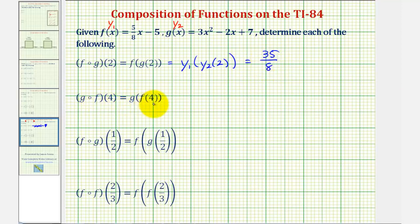Next we have g of f of four. And again we can't forget that f of x equals y sub one, and g of x equals y sub two. So here we would have y sub two of y sub one of four. It is important that we pay close attention to the order of composition. Notice here y sub two or g of x is the outer function, and y sub one or f of x is the inner function.